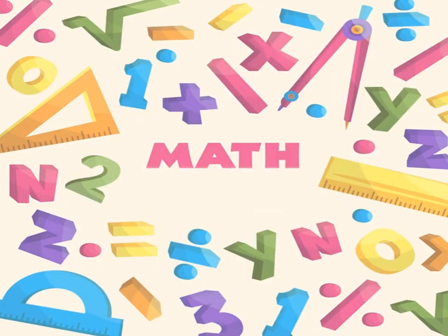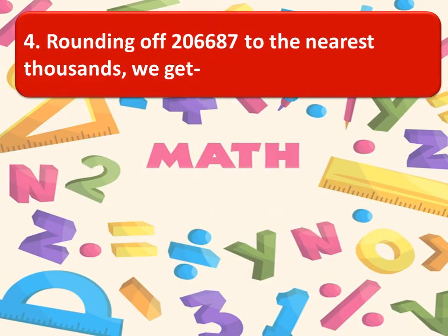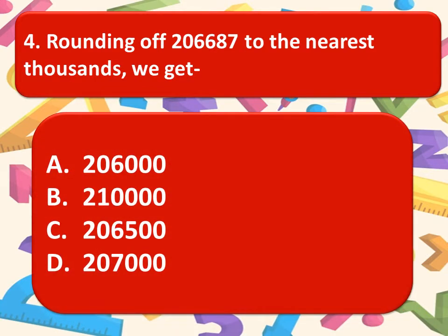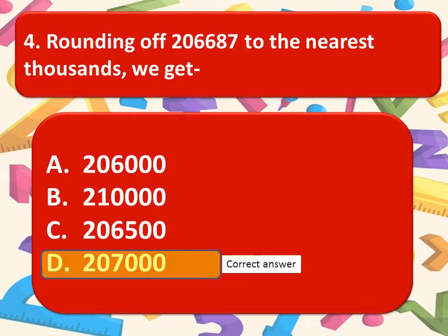The next one is rounding off 2,066,687 to the nearest thousands we get. Here are the options. Think about the correct option. You can pause the video to think about the correct option. And the correct option is option D, 2,07,000.